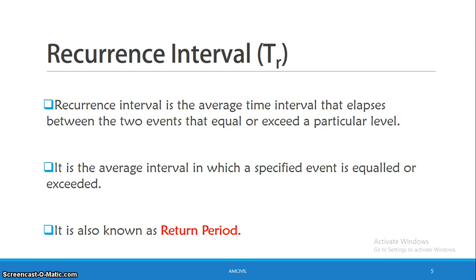Next, a related topic is recurrence interval. The recurrence interval is the average time interval that elapses between two events that equal or exceed a particular level. So, we say that at a particular rainfall level, there is a time interval. That is the recurrence interval. This is the average interval in which a specified event is equaled or exceeded.